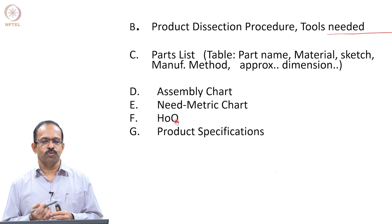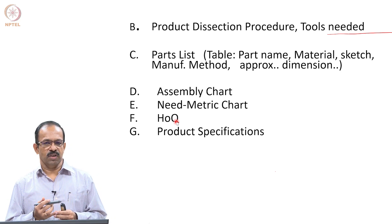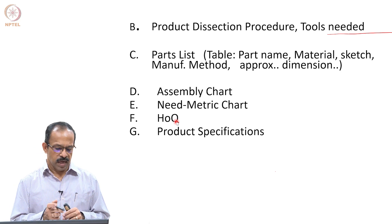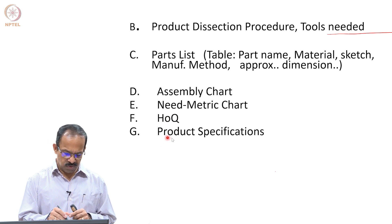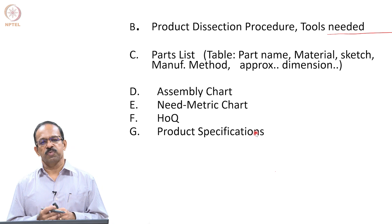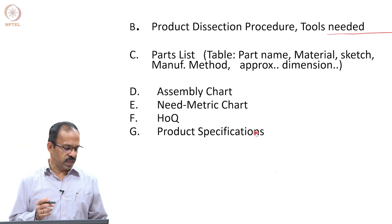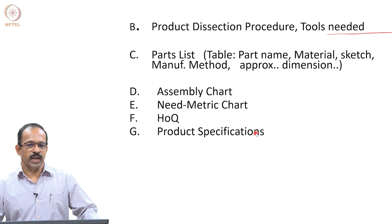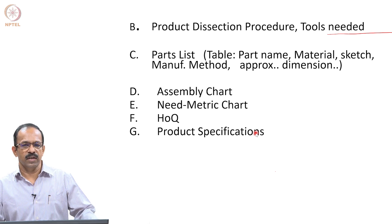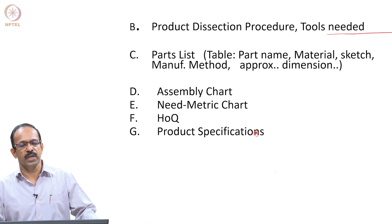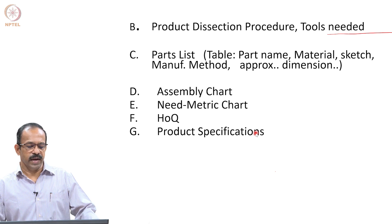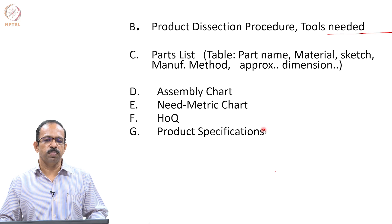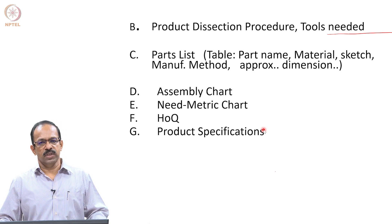All of you know how to prepare the house of quality diagram — provide all the information available and, if you are assuming some data, mention that in the reports. Based on this, specify what is the specification for the product to be mentioned in the report. The need-metric chart, house of quality, and product specifications are to be done by you as a group, then prepare the report and submit.